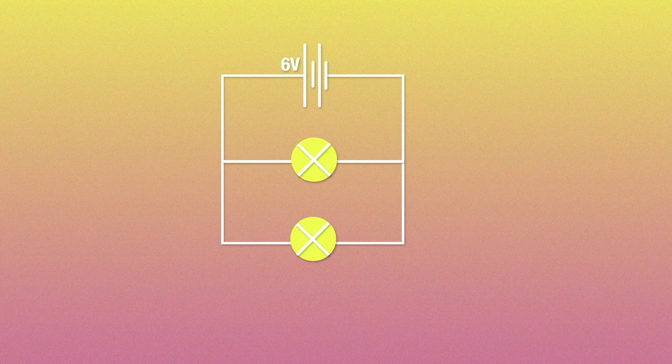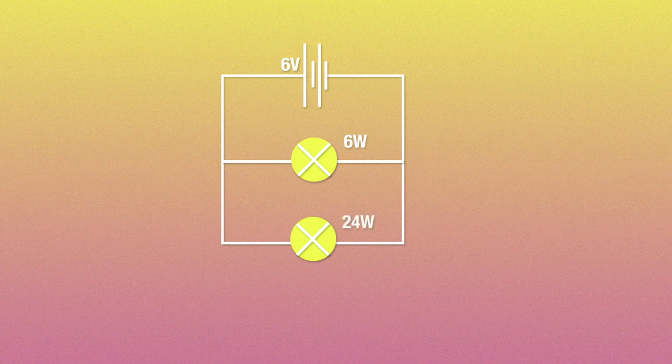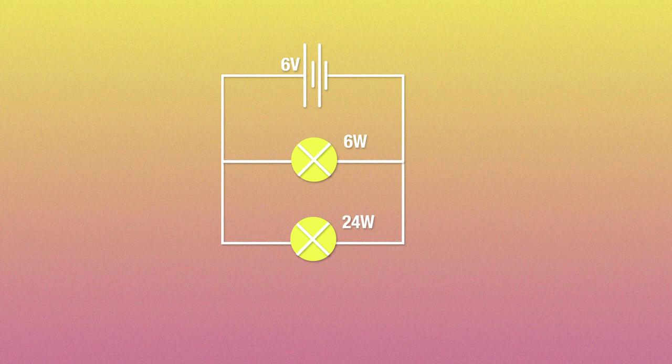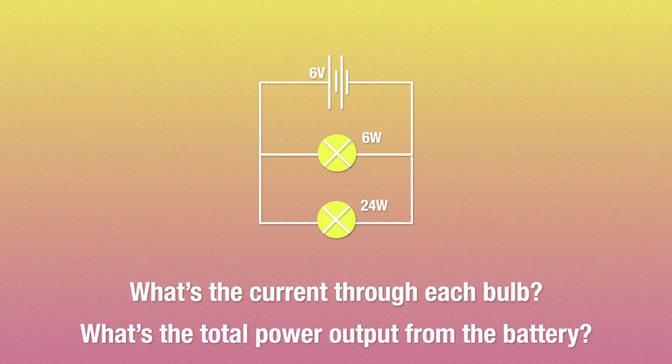Alright, just one more example. This time we look at how parallel resistors impact power. Let's say we have a circuit set up with two bulbs in parallel. One bulb draws 6 watts of power, while the other draws 24 watts, and they're both connected to a 6 volt battery. So now your mission, should you choose to accept it, is to figure out what the current through each bulb is, and what the total power output of the battery is.